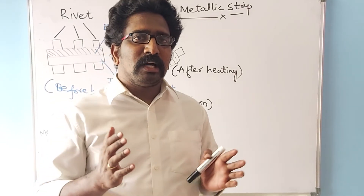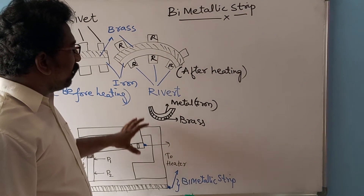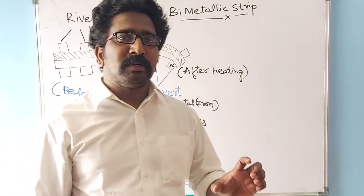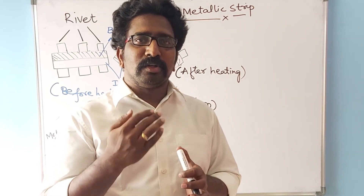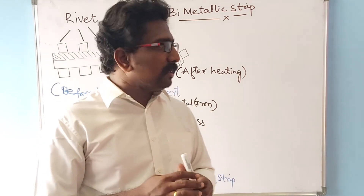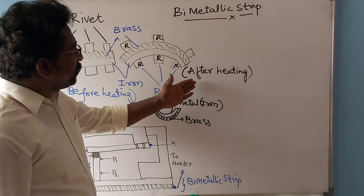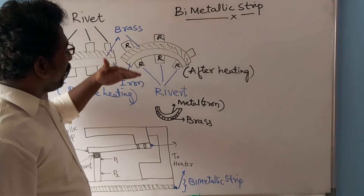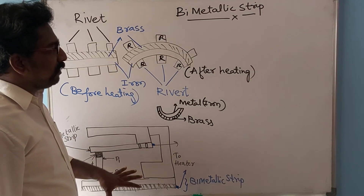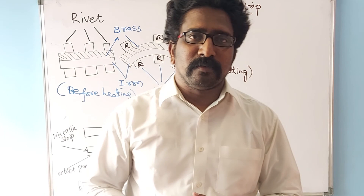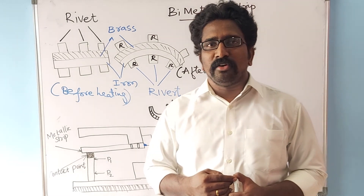This is how the bimetallic strip works in electrical geysers or electrical heaters. To summarize: a bimetallic strip is a combination of brass and iron where, due to thermal expansion, brass expands more than iron. After heating it expands in the upward direction and before heating both are leveled. We have also seen one application in the electrical geyser. I hope you have understood the concept of bimetallic strip. Thank you everyone for listening to this class.